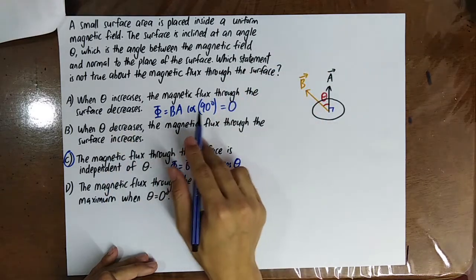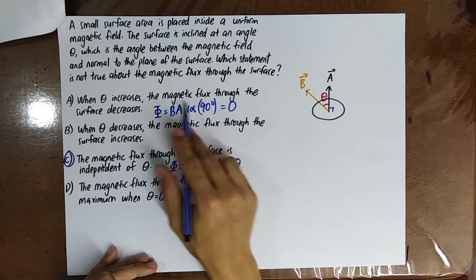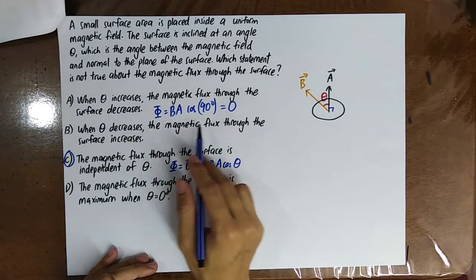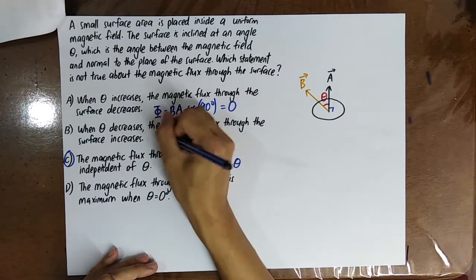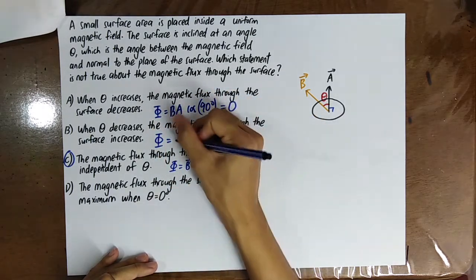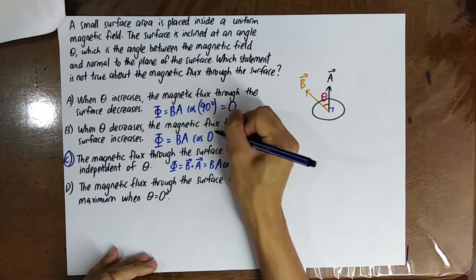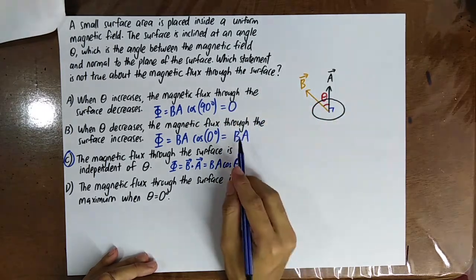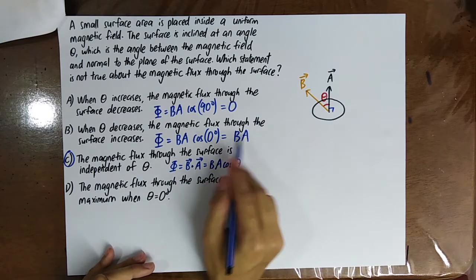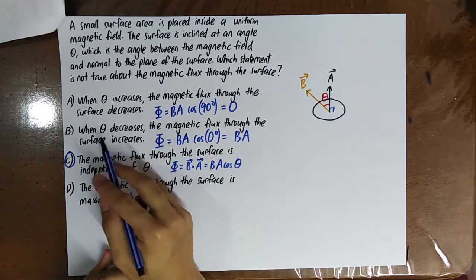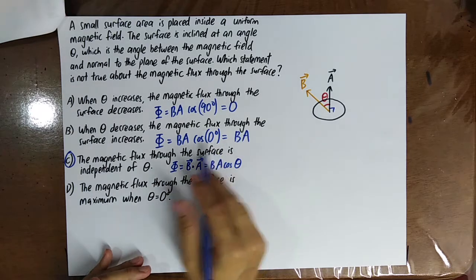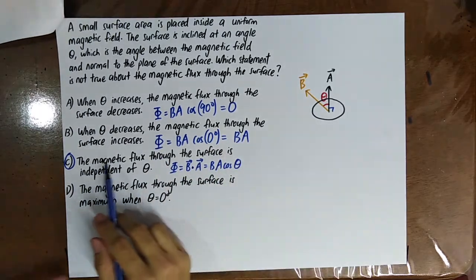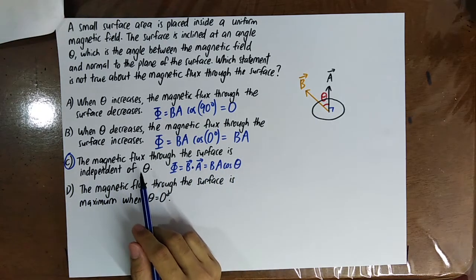When theta decreases, the magnetic flux increases. For example, when theta decreases to 0 degrees, cos 0 equals 1, so the magnetic flux is maximum. Statement: the magnetic flux through the surface area is independent of theta. Since phi equals B A cos theta, it is clearly dependent on theta. Statement C: the magnetic flux is maximum when theta equals 0 — this is correct.